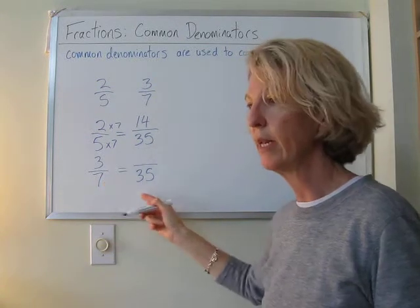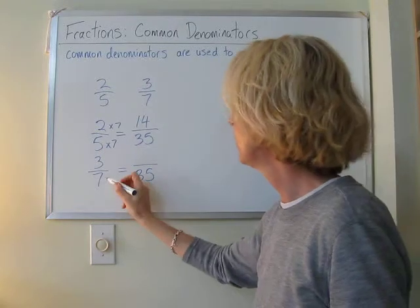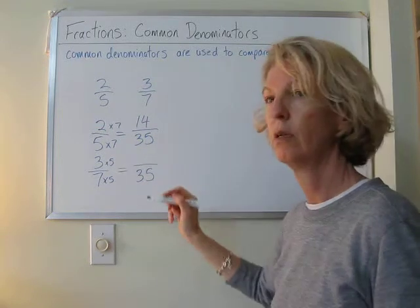As an equivalent fraction with a denominator of 35, what do we multiply 7 by to get up to 35? 5! Yeah, because it's just the opposite here. Okay, so that's times 5, and what's 3 times 5? 15.